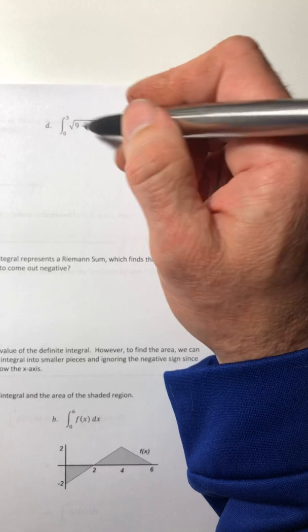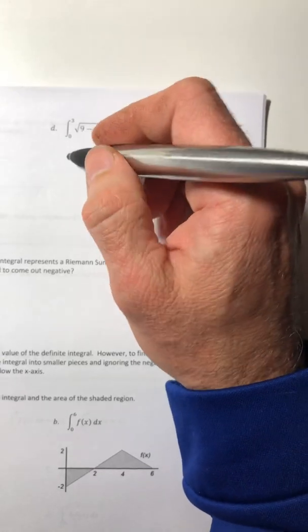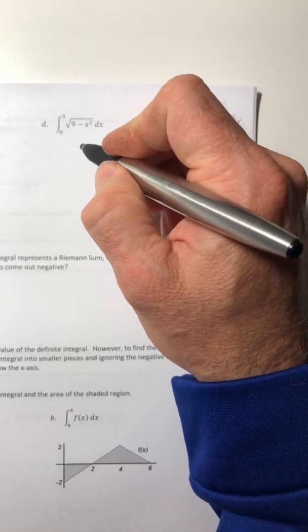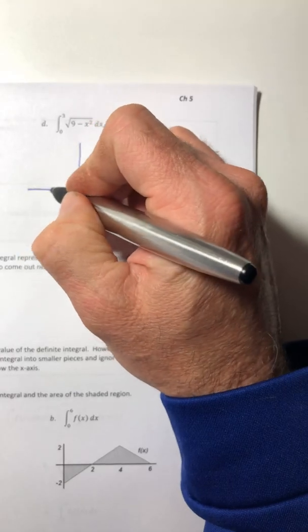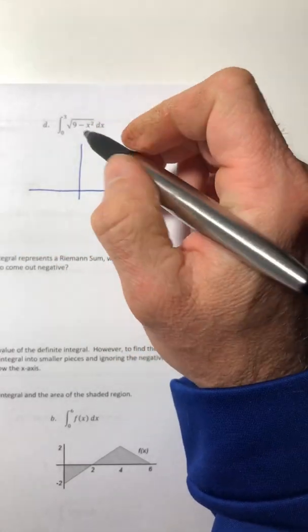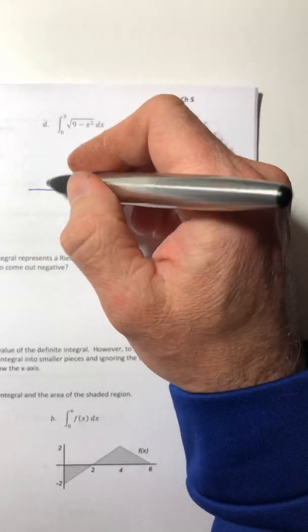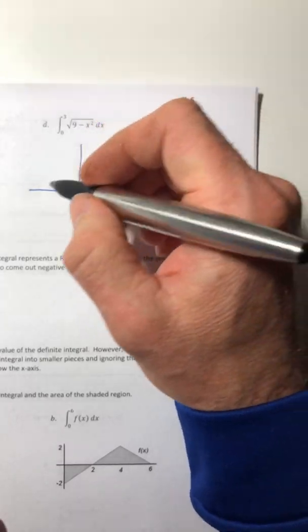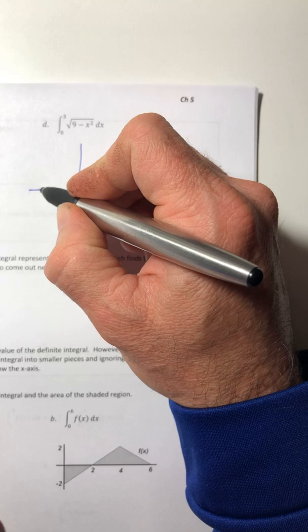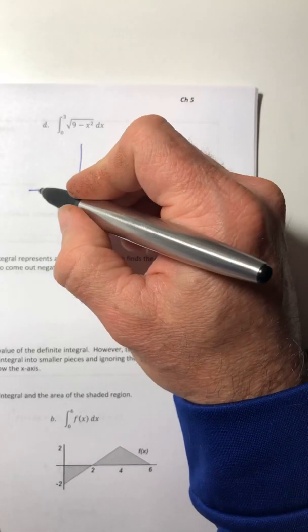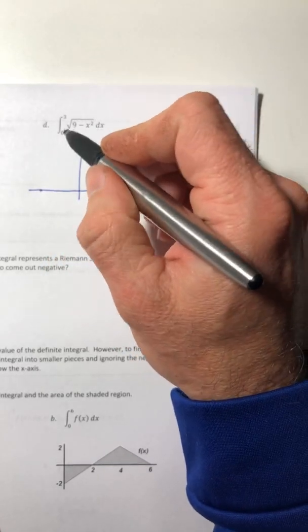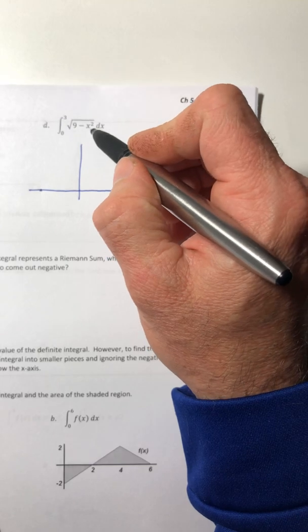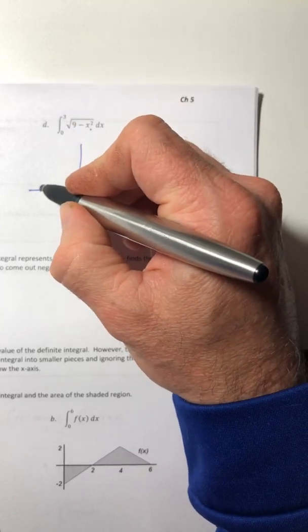All right, D, ooh, the graph of nine minus, or root nine minus x squared. So this is one that you just got to know. And remember, because you're going to see it in this class, we are going to see it quite a bit in calculus two. So this graph, the square root of nine minus x squared, is going to be a semicircle.